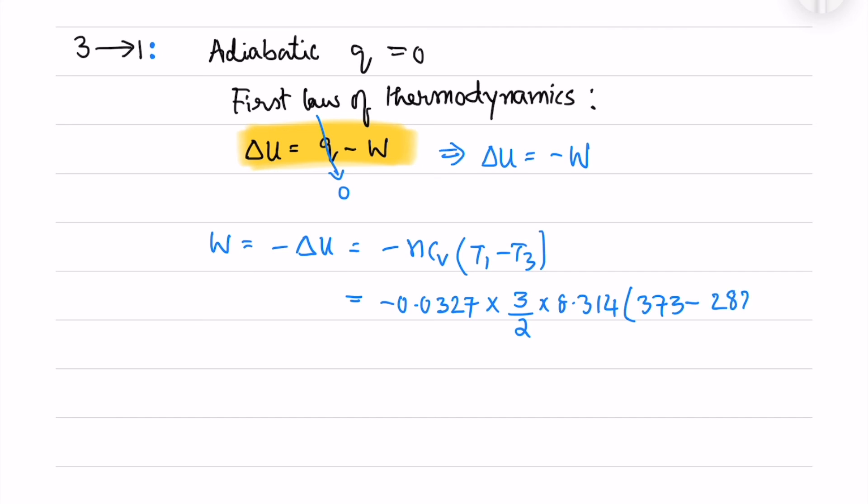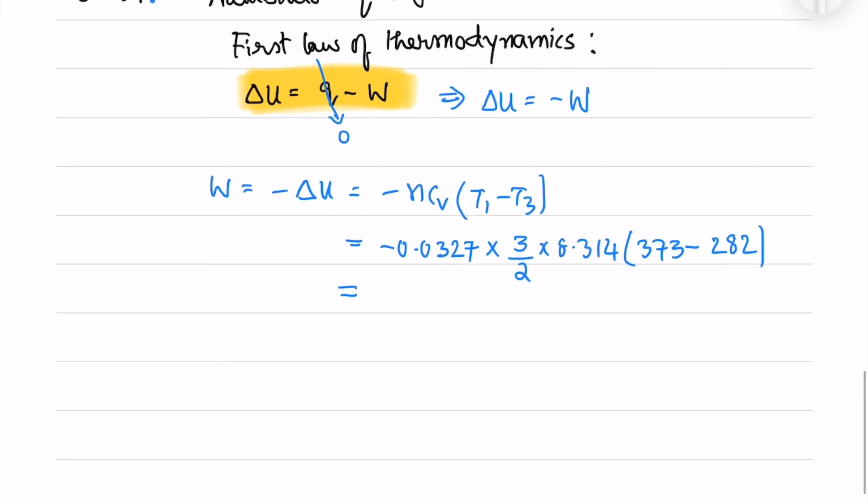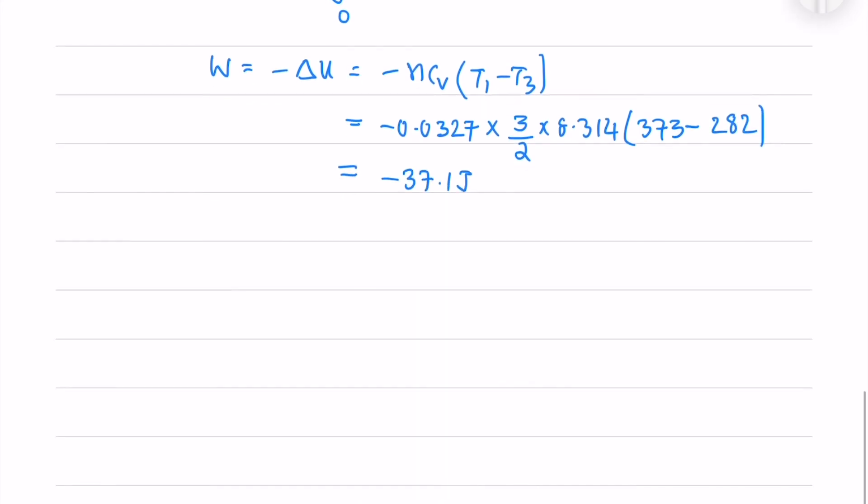So T3 is 282 kelvin. From that I will get the work done. So the total work done is the sum of all three work done which I will get 8.7 joules.